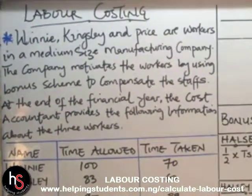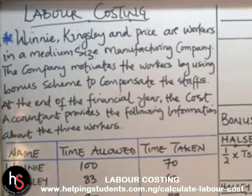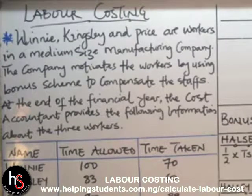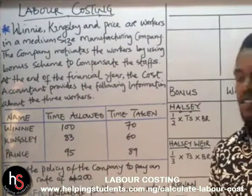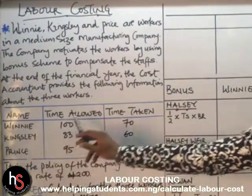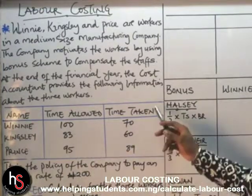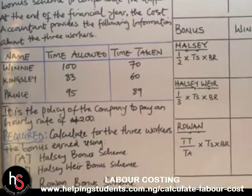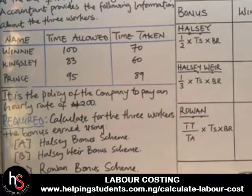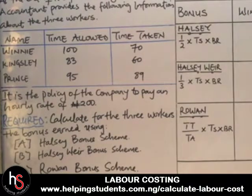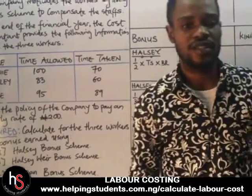Winnie, Kingsley, and Prince are workers in a medium-sized manufacturing company. The company motivates the workers by using a bonus scheme to compensate the staff. At the end of the financial year, the cost accountant provides the following information: time allowed is 100, 83, and 95; time taken is 70, 60, and 89. The company pays an hourly rate of 200 Naira. Calculate the bonus earned using the Halsey, Haslam, and Rowan bonus schemes.